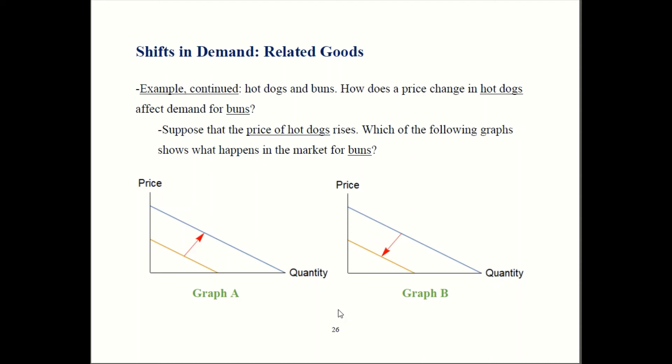So the price of hot dogs goes up, consumers are going to start buying fewer hot dogs. Now the whole point of buying a bun is to have a hot dog to go along with it. So if you're buying fewer hot dogs because hot dogs got more expensive, now you don't need as many buns.